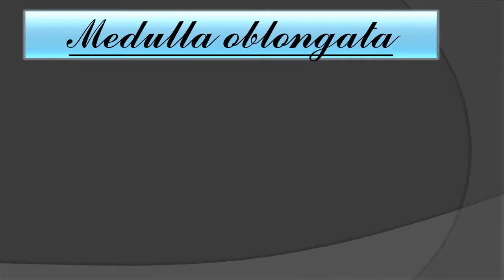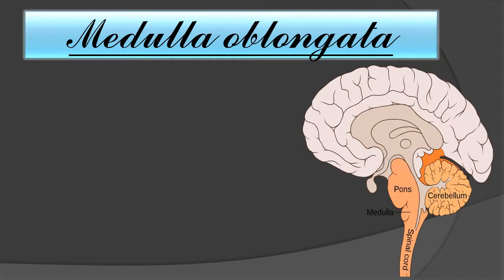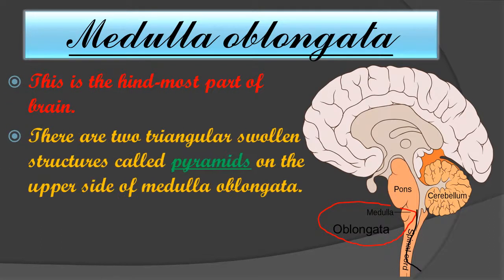The next part is the medulla oblongata. It is the hindmost part of the brain, located just below the pons. There are two irregular triangular swollen structures called pyramids on the upper side of the medulla oblongata, and it continues downward as the spinal cord.